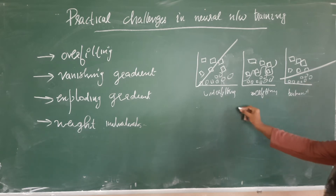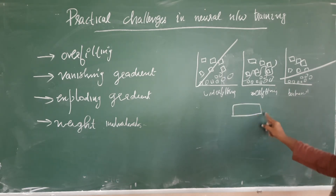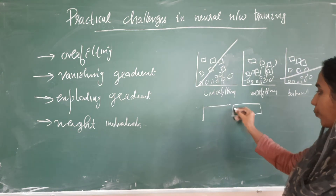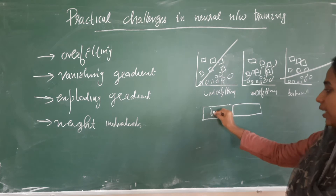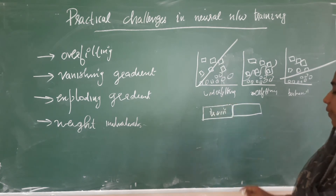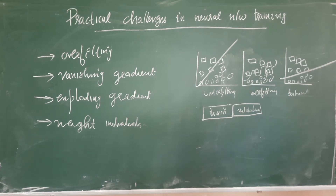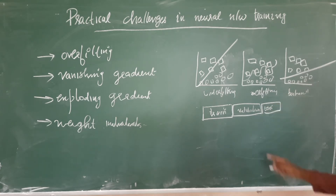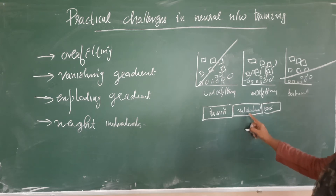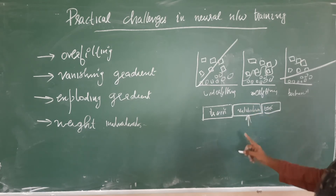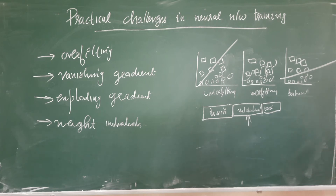Overfitting can be found during validation. We have a validation set or holdout set which is used to tune the hyperparameters. From the full data, we have a training set the model trains on, then a validation set kept aside to check whether the system is working fine prior to final testing, and then the test set for final testing. If we are getting overfitting during validation, we have to change the hyperparameters to get the best results at the end.